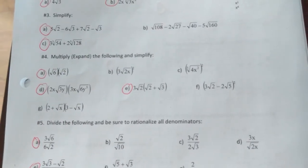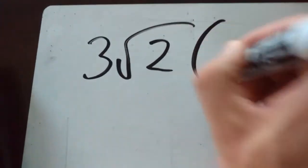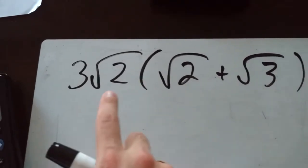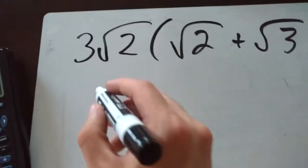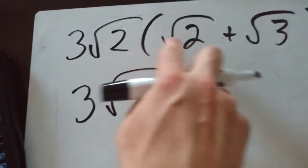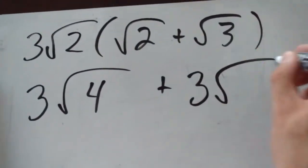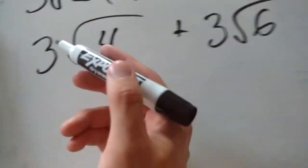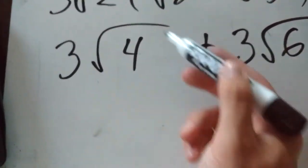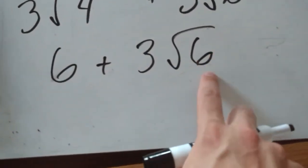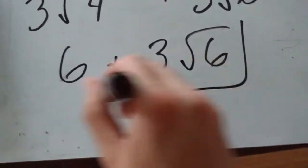For part E: 3 times root 2 times the quantity root 2 plus root 3. Distribute through the brackets: 3 root 2 times root 2 gives 3 times root 4, and 3 root 2 times root 3 gives 3 root 6. Root 4 is 2, so 3 times 2 is 6. Final answer: 6 plus 3 root 6, which doesn't simplify any further.